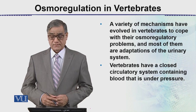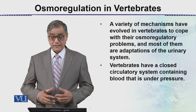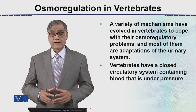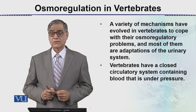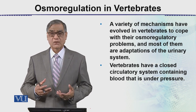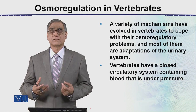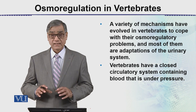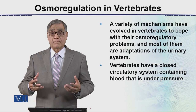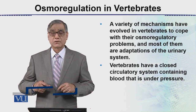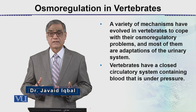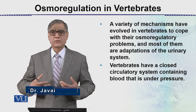There are a variety of mechanisms which have been evolved in vertebrates to cope with osmoregulatory problems, and most of them are adaptations of the urinary system, because the urinary system is the system which has maximum loss of water. In this case, the nitrogen waste is removed, which is very important to maintain osmoregulation.